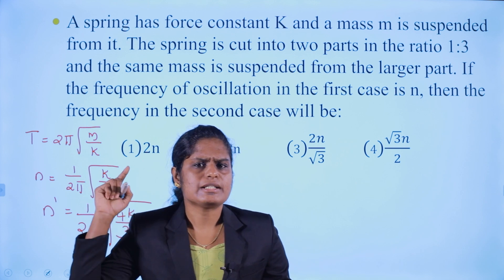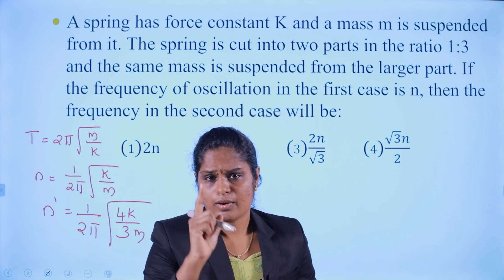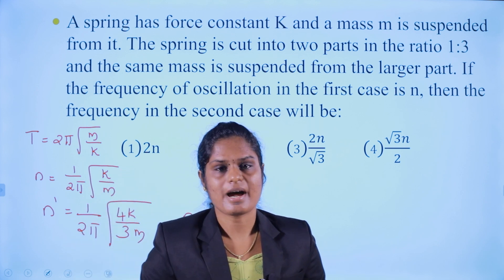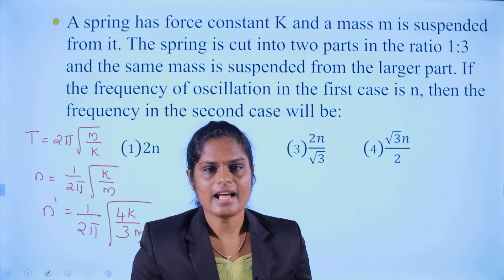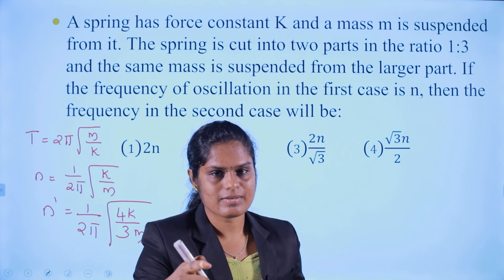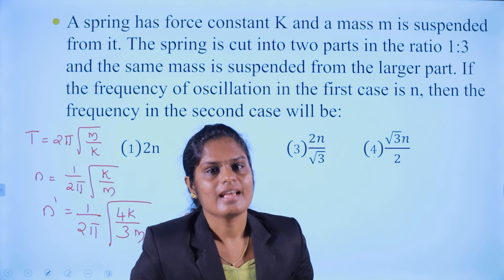We use k(n+1) for the smaller part and k(n+1)/n for the larger part. Apply these directly for any ratio like 1:3, 2:1, or 1:4.